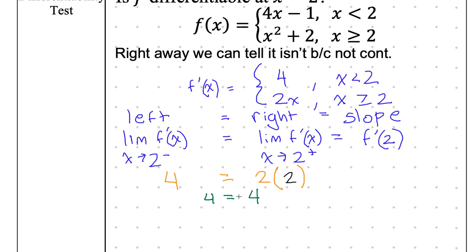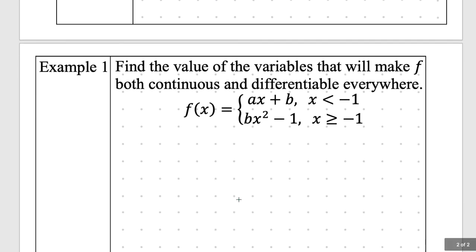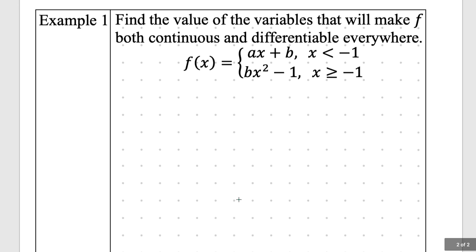Cool. And we have something on the back. All right. Find the value of the variables that will make f both continuous and differentiable everywhere. So again, we're doing two tests. Let's go ahead and do the continuity test first. Someone help me fill that in. I want to hear from either Teflon or Chris for this one. Continuity test. Go. There it is. ax + b = bx squared minus 1. Chris, what do I do after that?